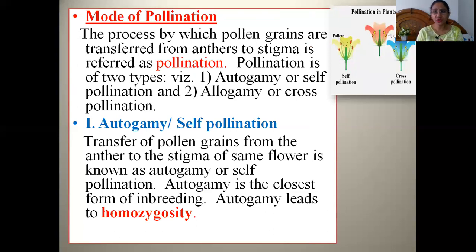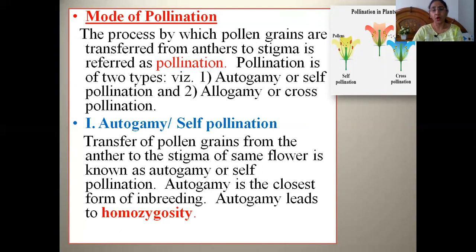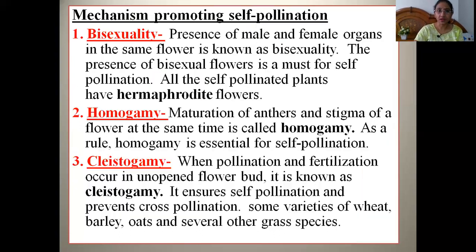Whatever the genetic constitution of the parent plant, the progeny will also have the same genetic constitution, because generation after generation there is no change — there is no level of heterozygosity present. We can say that autogamy leads to homozygosity. All plants of the population will have the same genetic constitution.